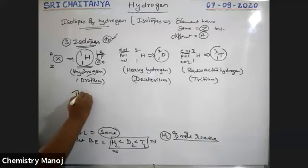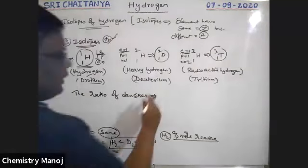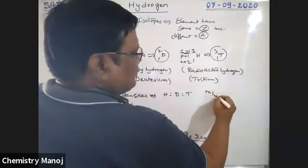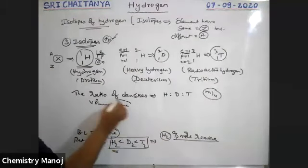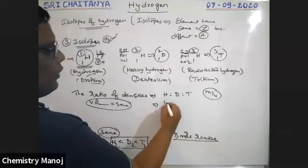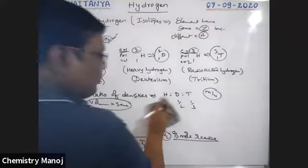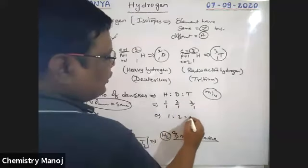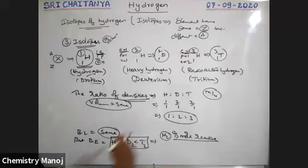The ratio of densities of hydrogen to deuterium to tritium: density = mass/volume. All three have the same volume, but masses are 1, 2, and 3 respectively. Therefore, the density ratio is 1:2:3 — the order of densities is hydrogen < deuterium < tritium.